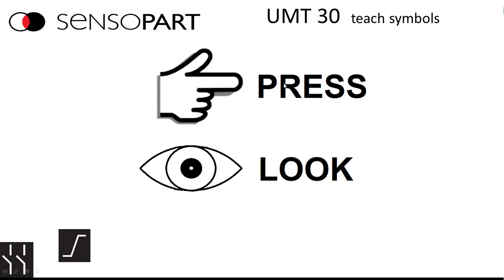Throughout the rest of this video, we're going to use the hand symbol to show you've got to press or hold a button. We'll use the eyeball to say look for something.